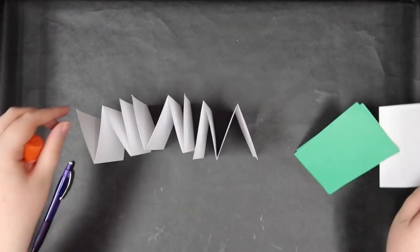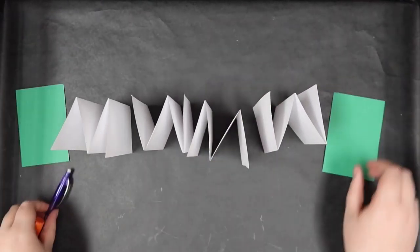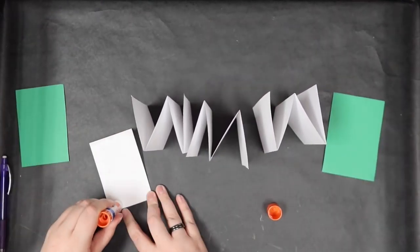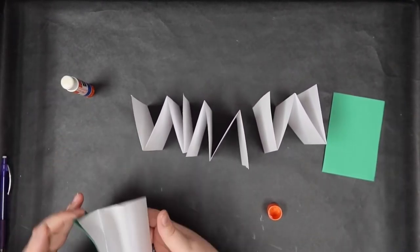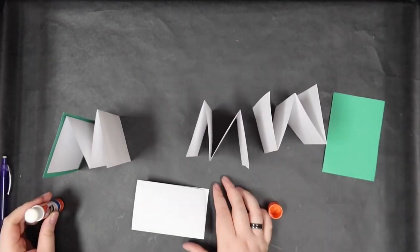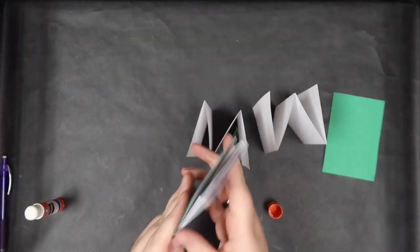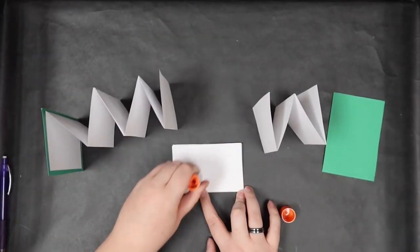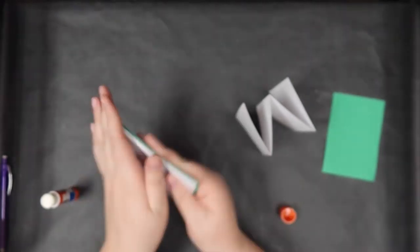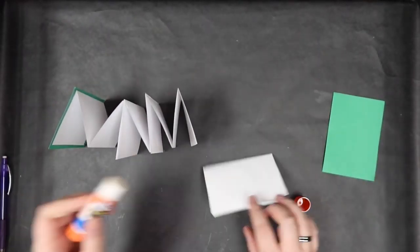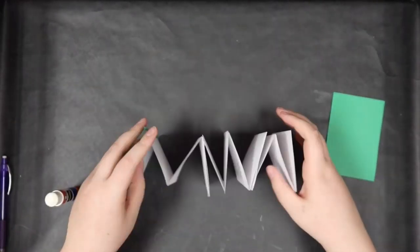Next we're going to be gluing our book together. Take our W's and M's and line them up so it'll be W M W M. This is so your accordion book works properly. Glue them in that order and don't forget to add your cover and the back of your book when gluing it together. In between pieces, be sure to press the paper and areas you glue together so it actually sticks.